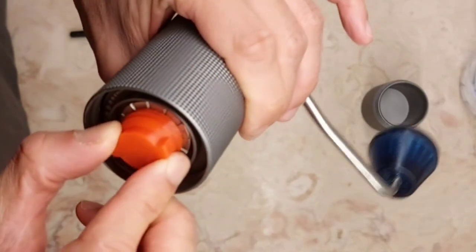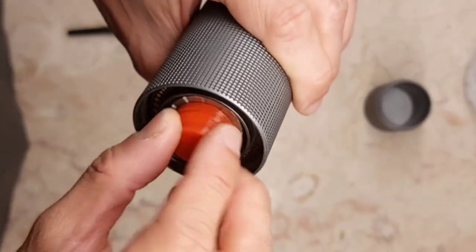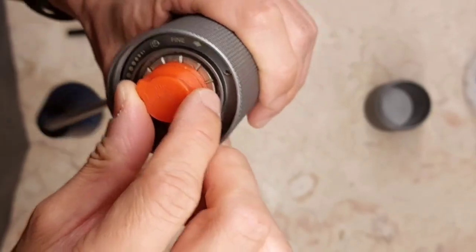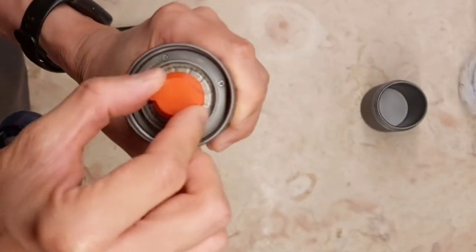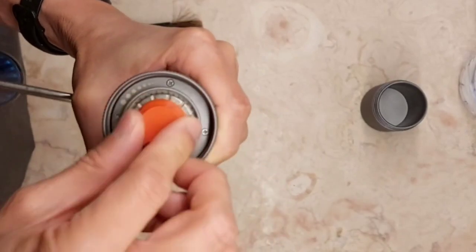This is a Nylock nut M7. M7 is not standard in Europe at least, so I recommend you to buy online. Nylock reduces the chance of slipping during the grinding.